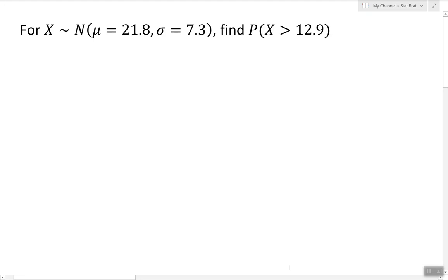When working with a normal random variable, the most important fact to remember is that all the answers to questions like this can be obtained by relating this normal random variable to the standard normal random variable z. In our case we have the probability of x being greater than 12.9 and we're going to do this process in two steps.